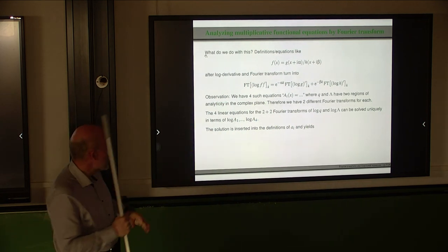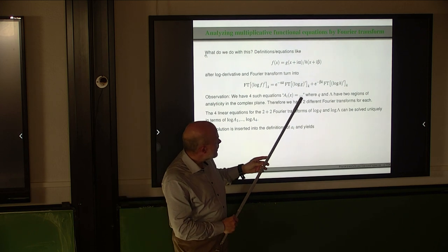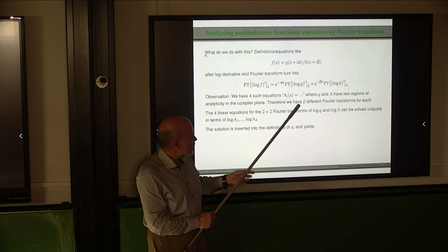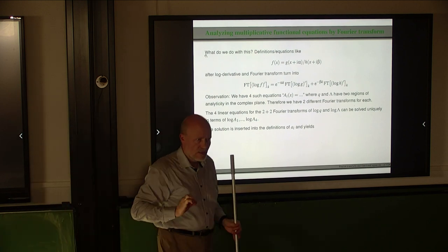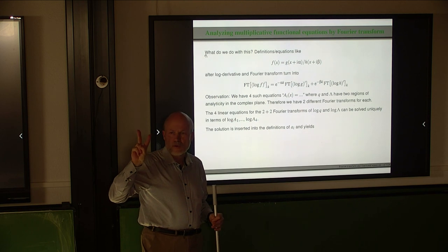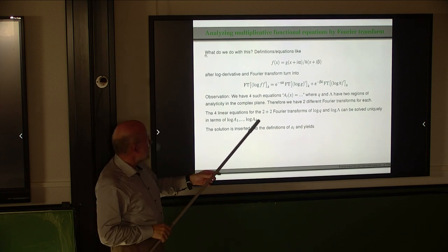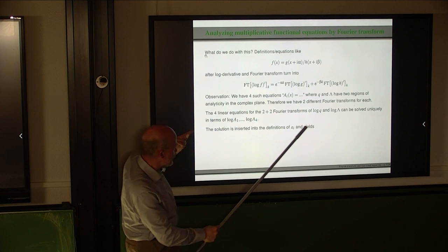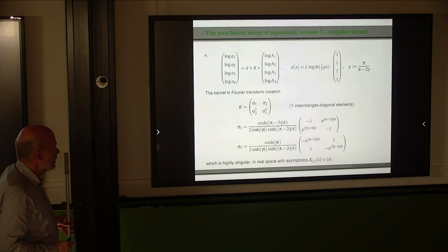We have four equations of the type for capital A₁, A₂, etc., where on the right-hand side appear ratios and products of Q and lambda. The functions Q and lambda have two different regions of analyticity, so there are two different Fourier transforms. With four linear equations and four unknowns — two Fourier transforms of Q and two of lambda — we solve and insert these explicit Fourier transform expressions into the definitions of the little a's. And there they are: the integral equations. By the way, the calculation is very short — it fits on one page.